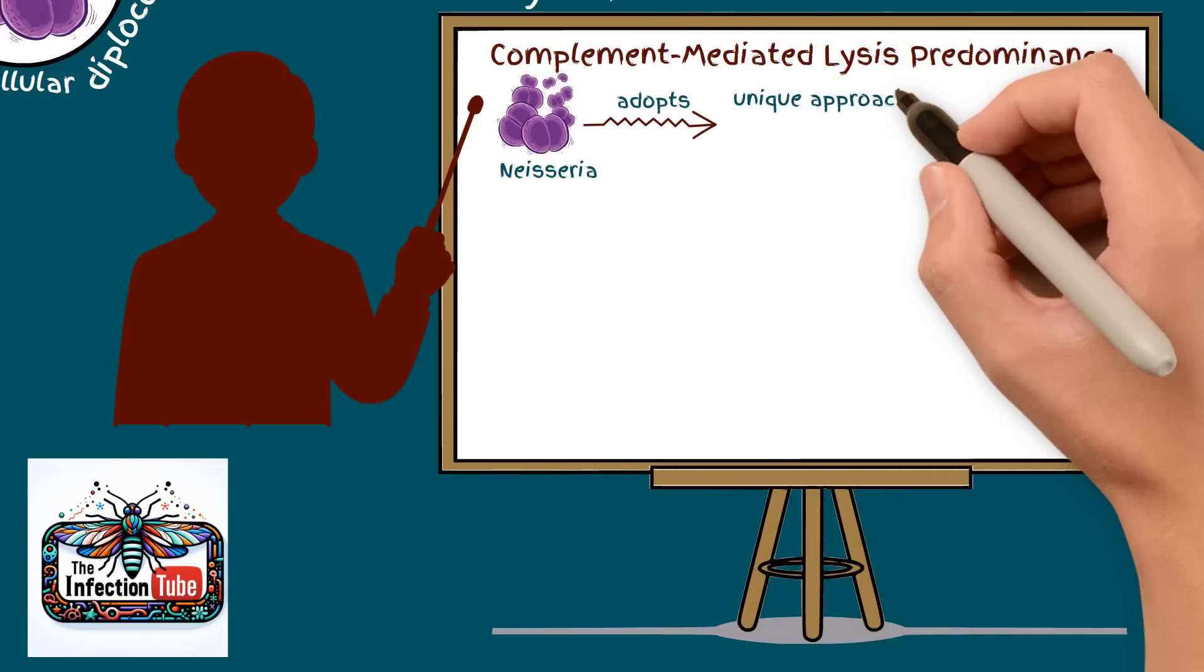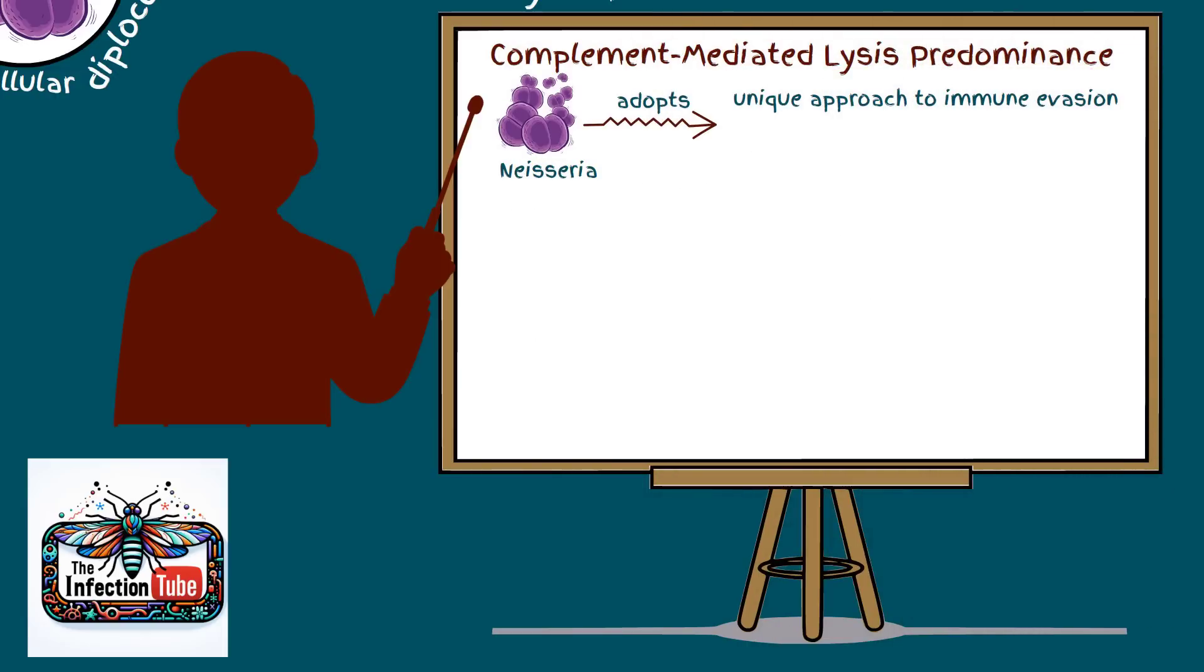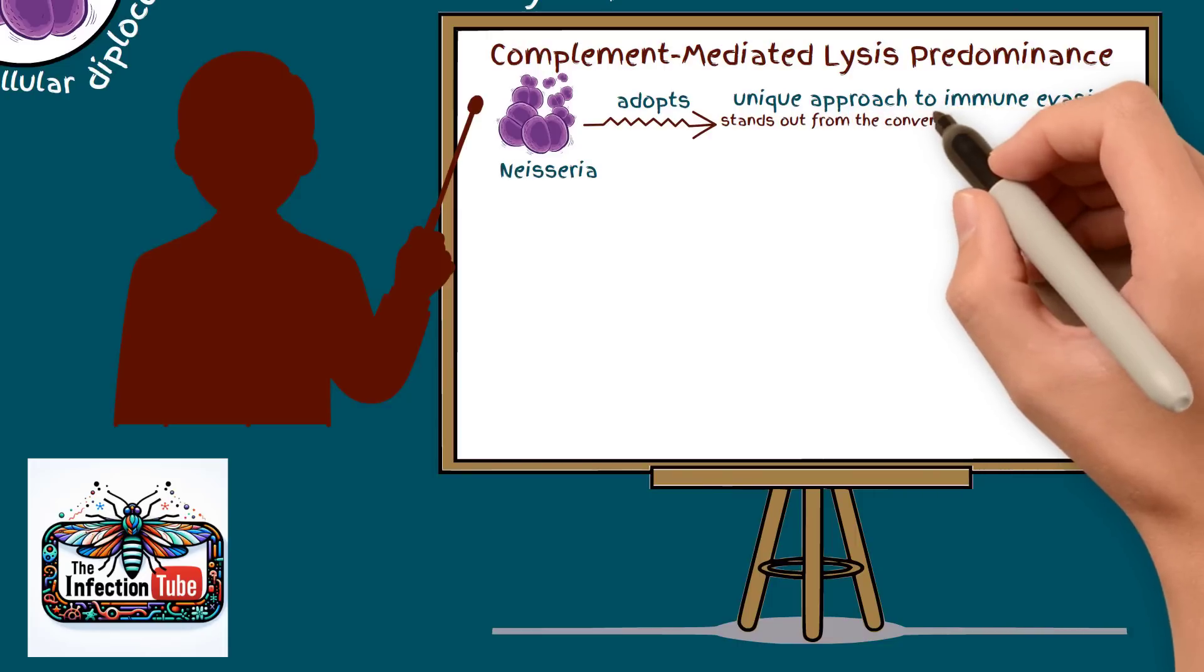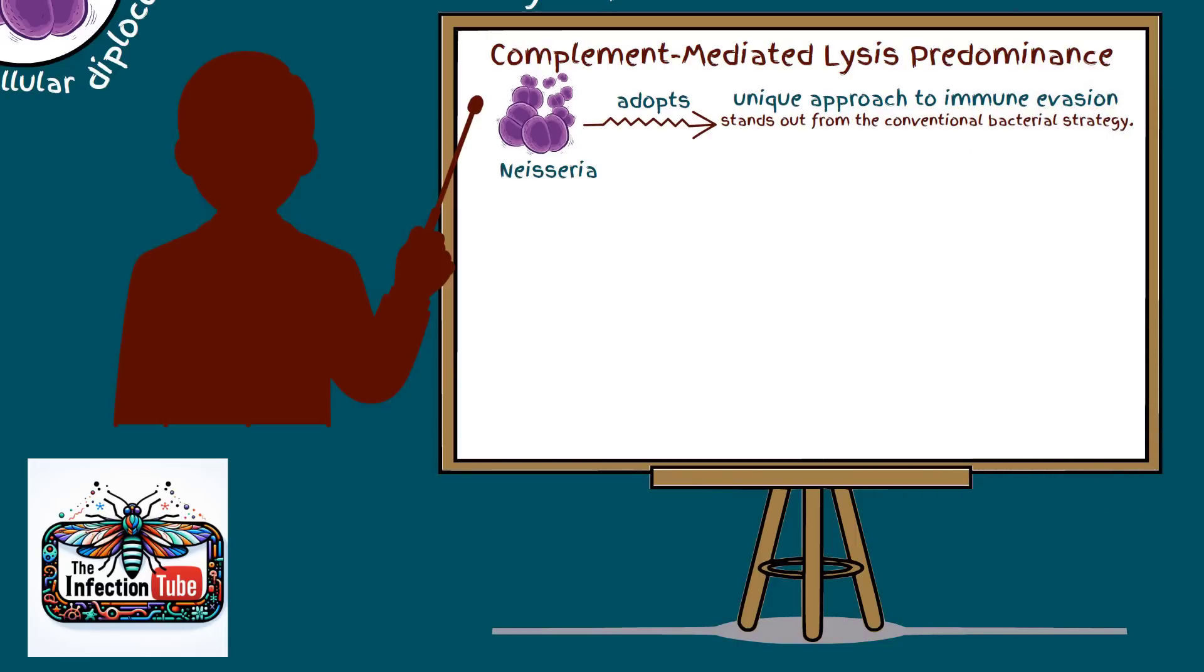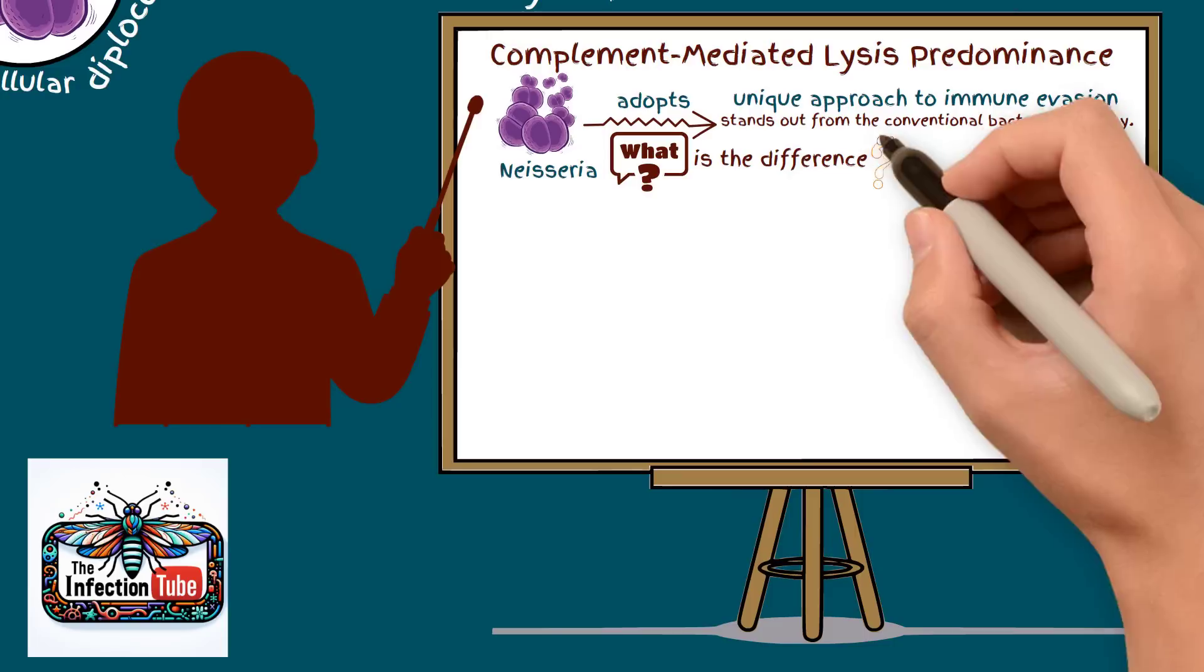Neisseria adopts a unique approach to immune evasion, which stands out from the conventional bacterial strategy. What is the difference between the two strategies?